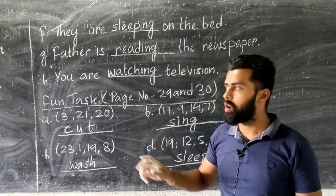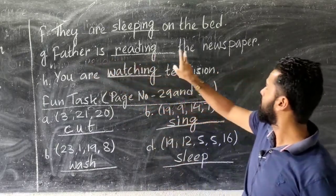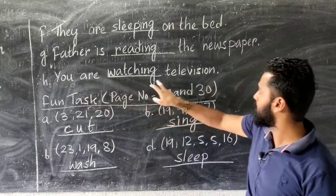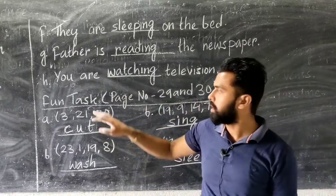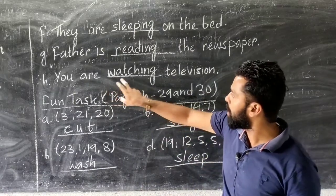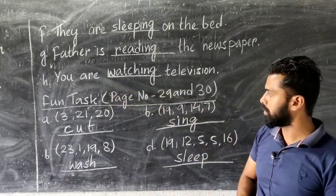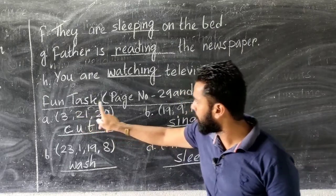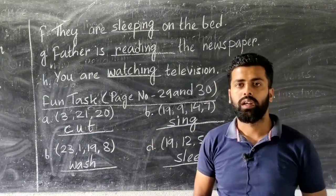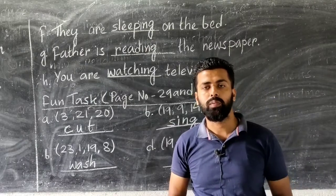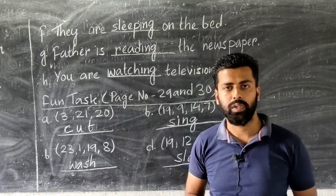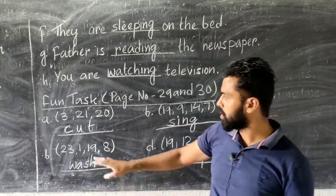Next you have, you are dash television. Here you will fill the verb from the box. That is, you are watching the television. Next you see the fun task, page number 29 and 30. There are codes given in your book. The position of the letters are given in numbers. You have to see the position of the letter and write the correct letter in the correct position.